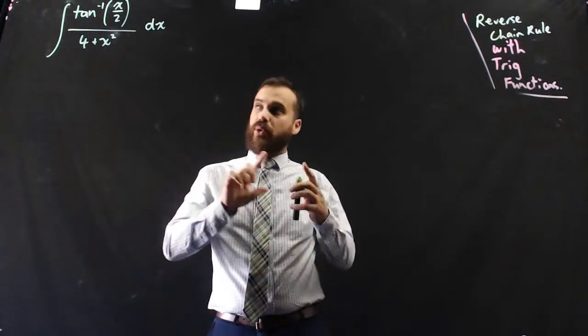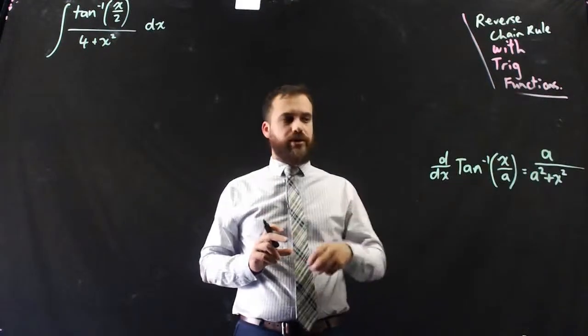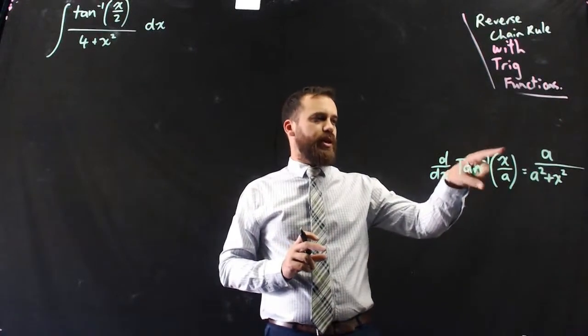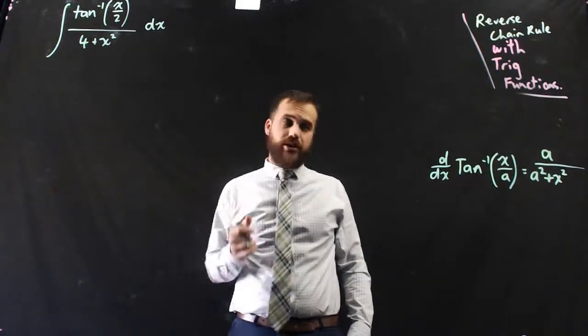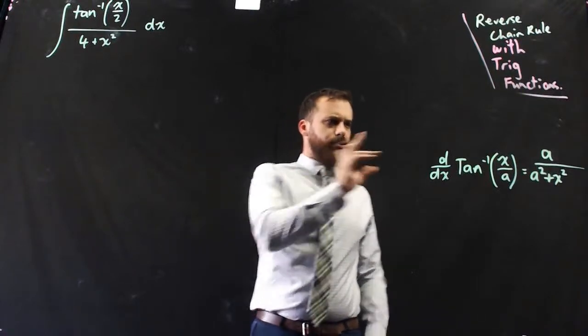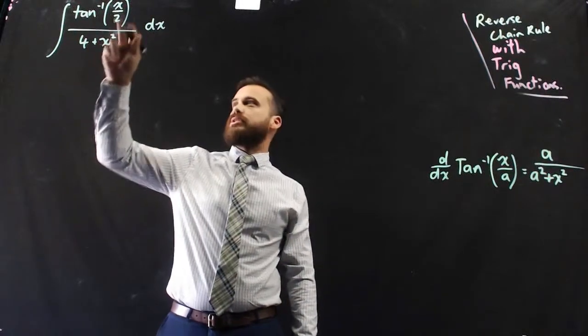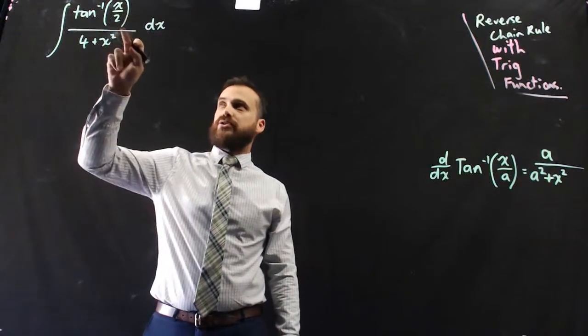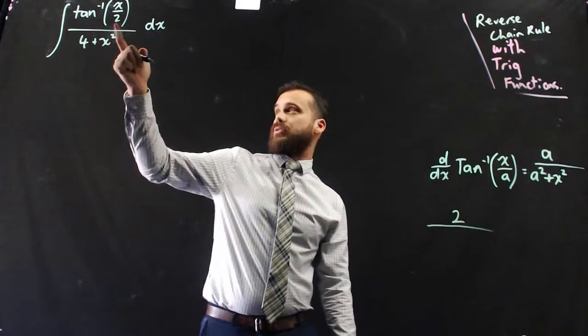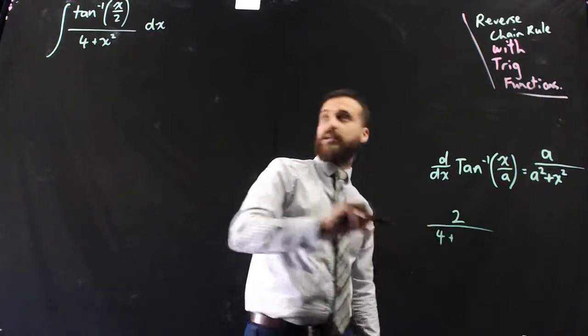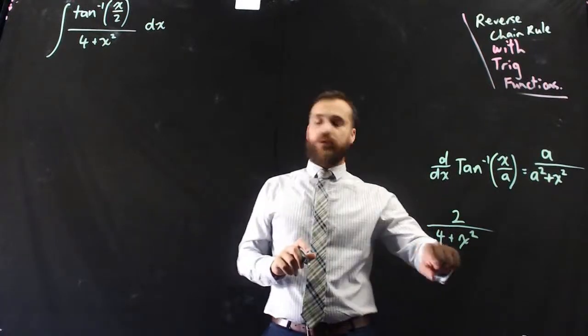So let's quickly figure out the derivative rules for inverse tan. So here's our rule. The derivative of tan to the negative 1, x on a, equals a on a squared plus x squared. Now again, you can find this in your little integral table, just working in reverse. So, tan negative 1, x on a. Now we would expect the derivative of tan negative 1, x on 2, to be 2 over a squared, which is 4, plus x squared. So 2 on 4 plus x squared.